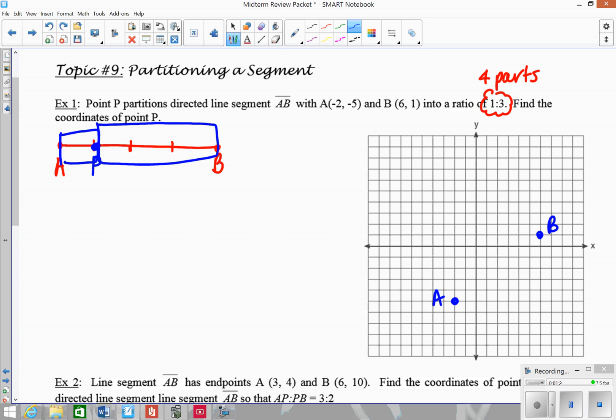Basically, what I'm going to do is I need to find point P, which will be closer to A, so that I have this in a 1 to 3 ratio. You want to look at what's the horizontal change, what's the vertical change. How did I get from A to B? If you look, I had to go 6 units up, and then over 8.